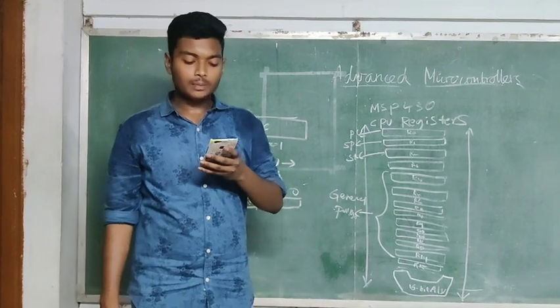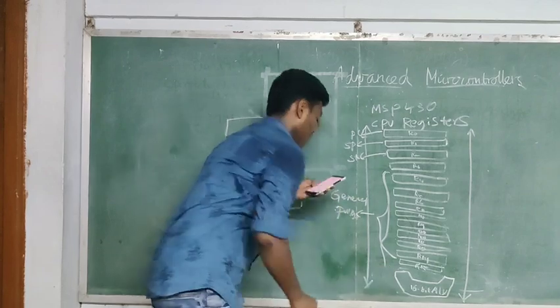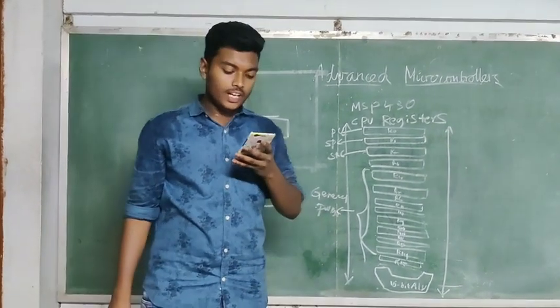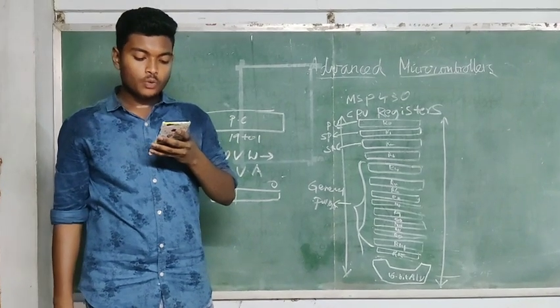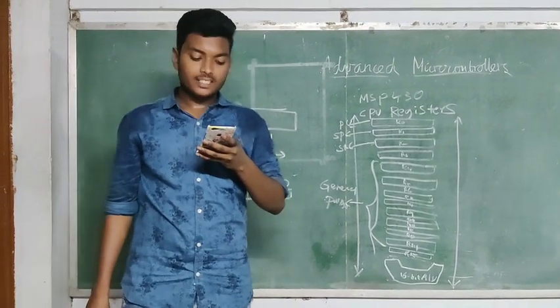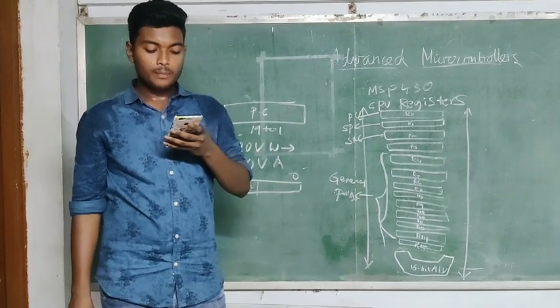Let's see about general purpose registers R4 to R15. These 12 general purpose registers have value from 8-bit, 16-bit or 20-bit values. The only exception is the SXT instruction. The SXT instruction extends the sign through the complete 20-bit register.